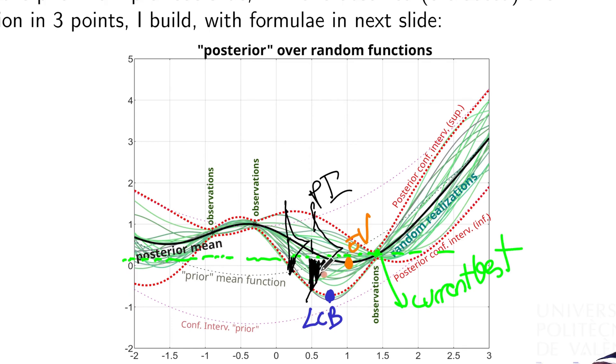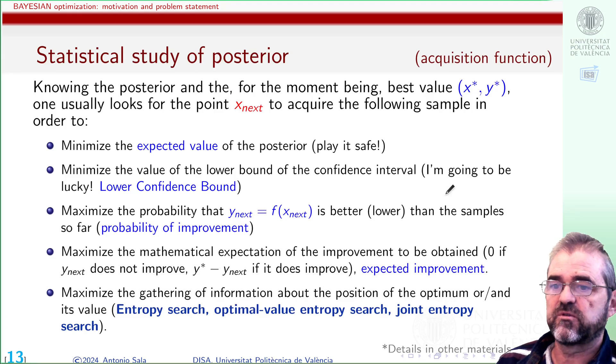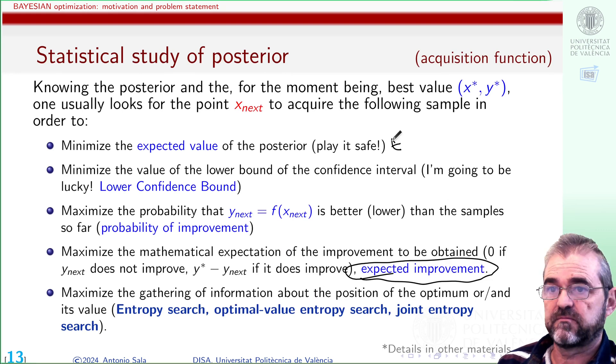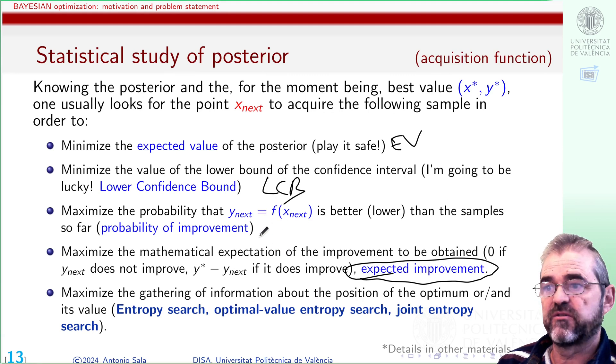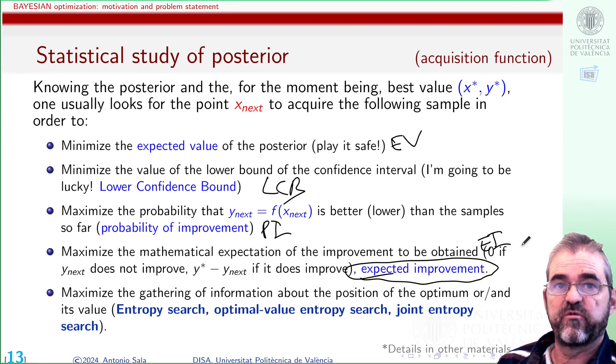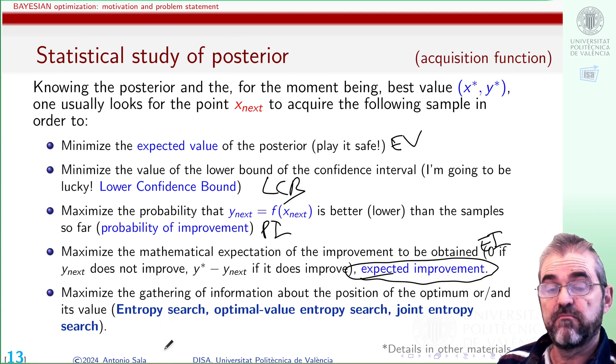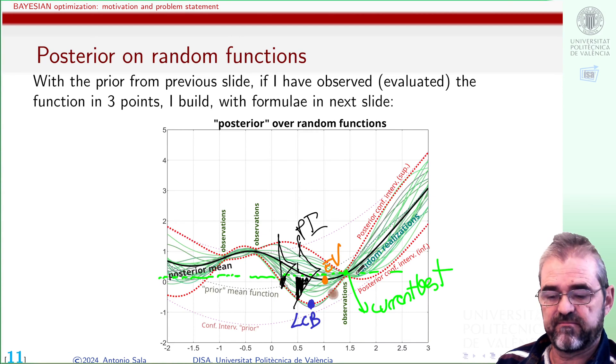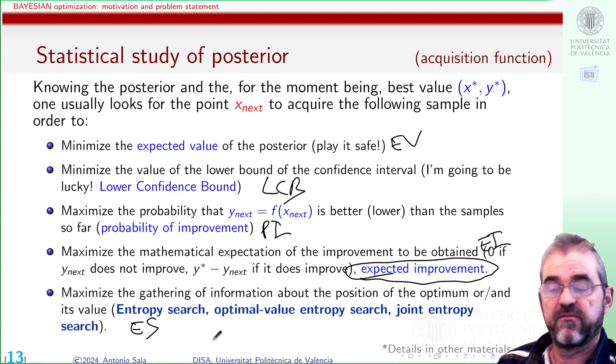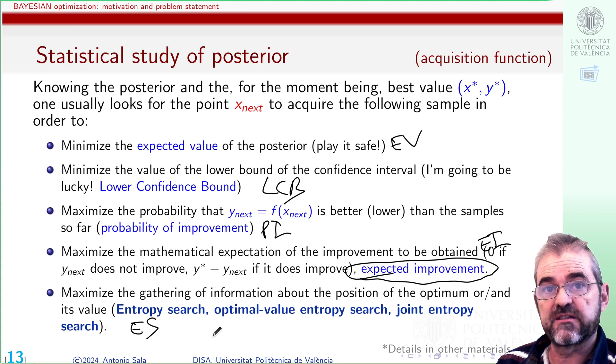Or we can multiply each of these black points with actual probability of improving by the value and get the so-called expected improvement. Expected value, lower confidence bound, probability of improvement, expected improvement, these are the kind of acronyms you get in the literature on Bayesian optimization. Or we can directly measure in bits of entropy the information I gain by sampling at the given point, and those methodologies are variants of what are called entropy search methods.